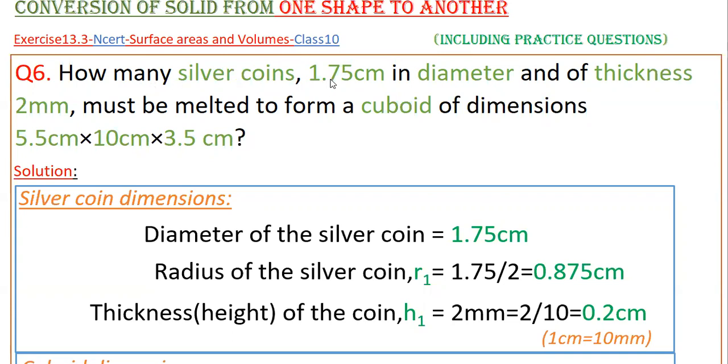How many silver coins 1.75 centimeters in diameter and of thickness 2 mm must be melted to form a cuboid of dimensions 5.5 centimeters by 10 centimeters by 3.5 centimeters?